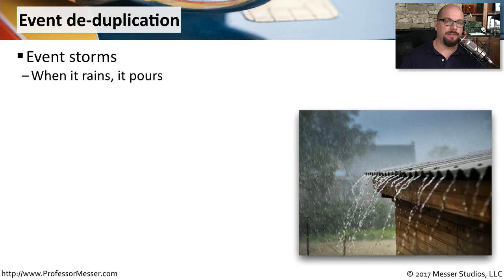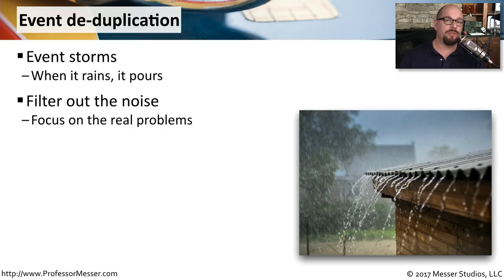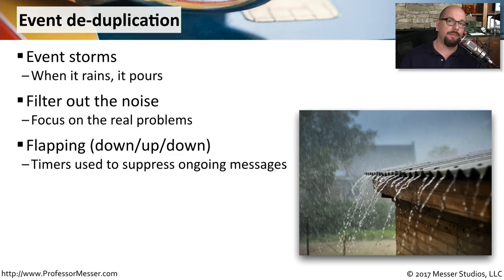On many logging devices, you might encounter the problem of an event storm. For example, if a wide area network connection goes down, did you lose one connection or 50 connections to 50 remote sites? An event like that can fill up the event log. Many SIEMs can deduplicate these events so you can focus on what really matters. This also applies to an interface that constantly flaps up and down — instead of writing 100 separate events, the SIEM can deduplicate them into a single event stating it occurred 100 times.